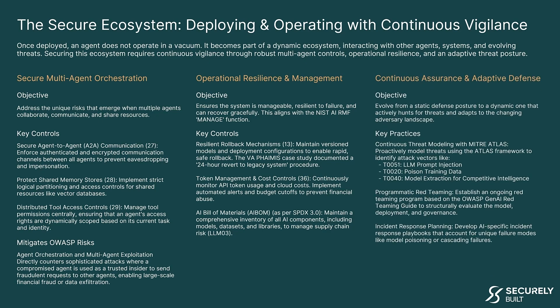Third is continuous assurance and adaptive defense. The objective is to evolve from a static defense posture to a dynamic one that actively hunts for threats and adapts to the changing adversarial landscape. Key practices include continuous threat modeling with MITRE Atlas, programmatic red teaming based on the OWASP Gen AI red teaming guide, and incident response planning with AI-specific playbooks that account for unique failure modes like model poisoning or cascading failures.